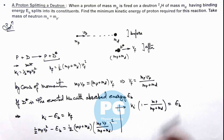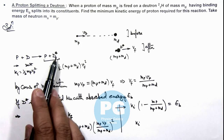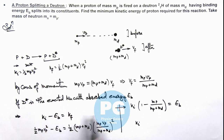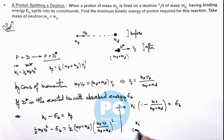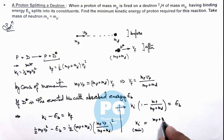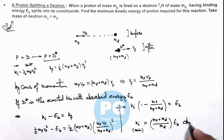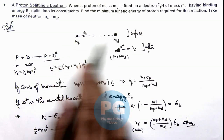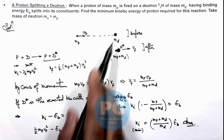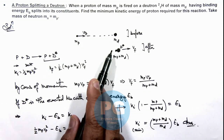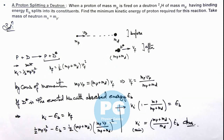Further simplifying gives the value of initial kinetic energy for this reaction to take place, in which d will absorb Eb amount of energy so that it further splits into its constituents. The minimum value of Ki is given as (mp plus md) divided by md, multiplied by Eb. So the proton can absorb energy more than or equal to Eb when fired onto a deuteron, and it will split into its constituents.